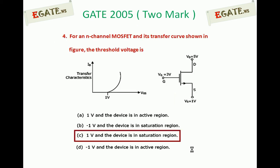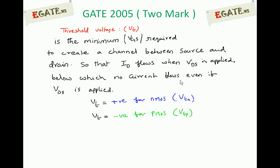Looking at the diagram, this is an N-channel MOSFET. There are two lines with a gap in between, which implies this is an enhancement mode MOSFET. For an enhancement mode MOSFET, initially there is no channel between drain and source. We need to enhance the channel by applying gate voltage — the minimum voltage required to establish a channel between drain and source, such that drain current flows, is treated as the threshold voltage.